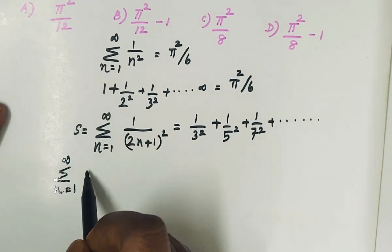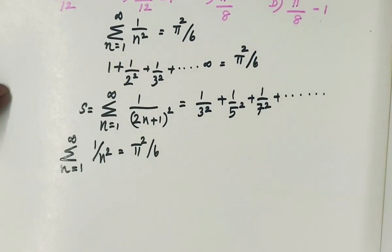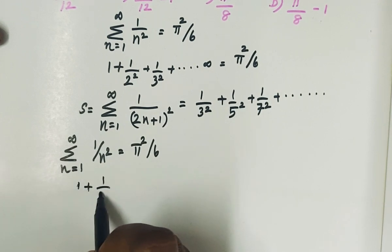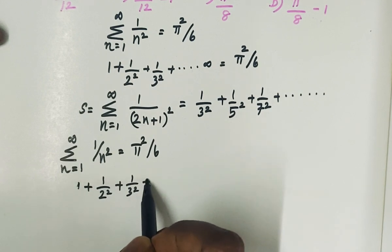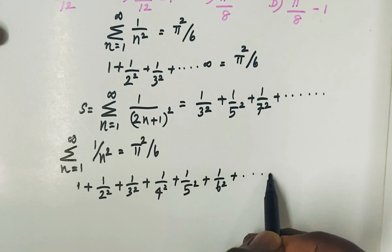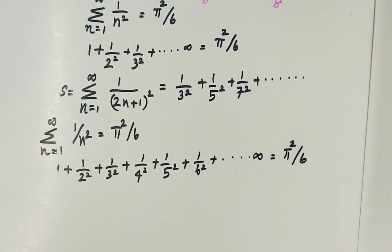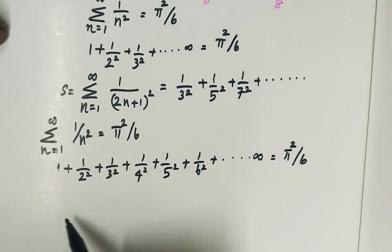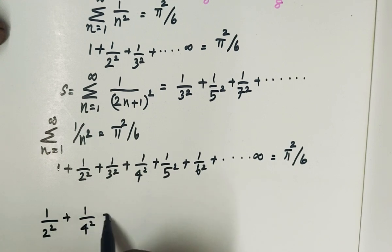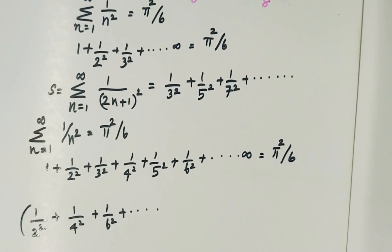Summation n equal to 1 to infinity, 1 by n square equals pi square by 6. Now we substitute values. So we write: 1 plus 1 by 2 square plus 1 by 3 square plus 1 by 4 square plus 1 by 5 square plus 1 by 6 square and so on equals pi square by 6. Next step: we identify the even-denominator terms — 1 by 2 square, 1 by 4 square, 1 by 6 square — these are even power terms in the denominator, and we will collect them.